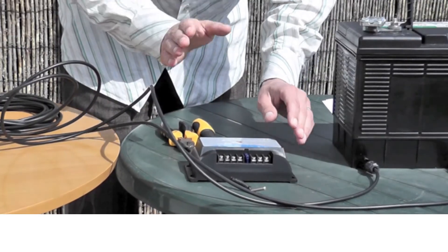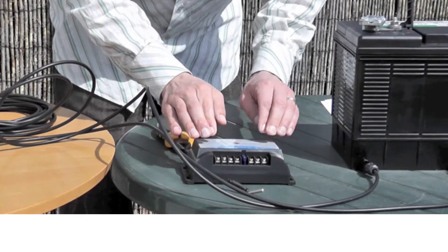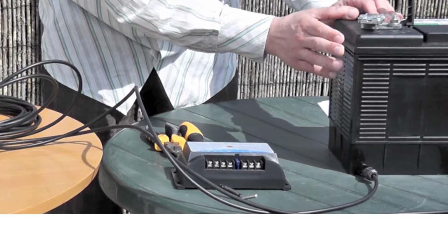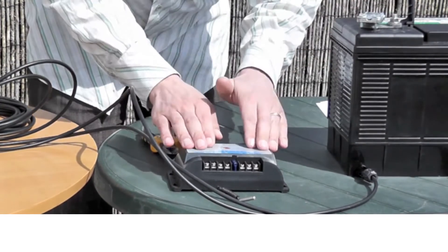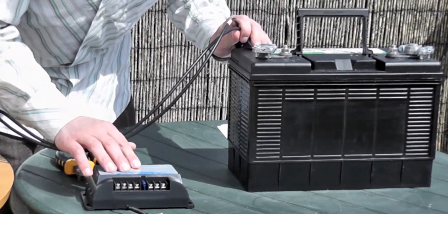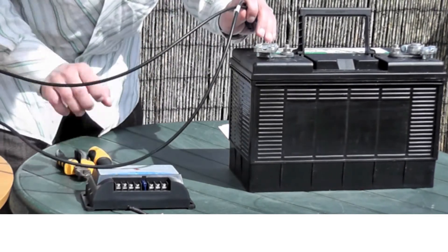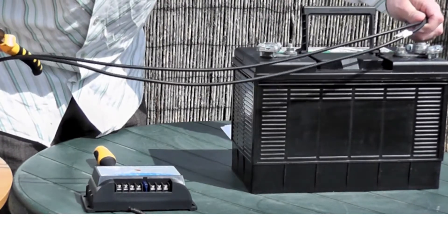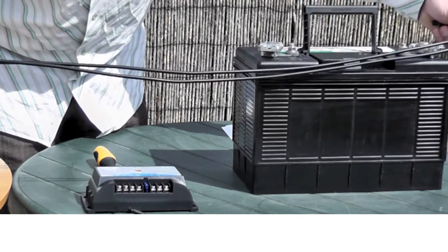So now you have your panel mounted, you have your charge controller mounted, and you have your battery in place. You now need to cut the wires to make them the right distance, to lead from your battery to your charge controller. So I work out the distance between the charge controller and the battery, and I'll cut the wires to the right length. It's useful to give yourself a little bit of extra here, so I'll cut them about here.